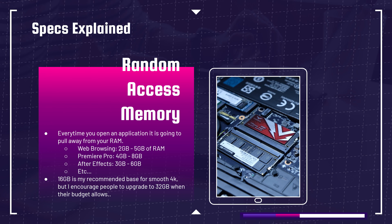Each time you open a program in your computer, it will pull away from the usage of RAM. So if you have 16 gigs of RAM, that's the pool that you have to pull from. Let's say you open Google Chrome — that's going to use anywhere from 2 to 5 gigs of RAM, depending on how many tabs you have open.